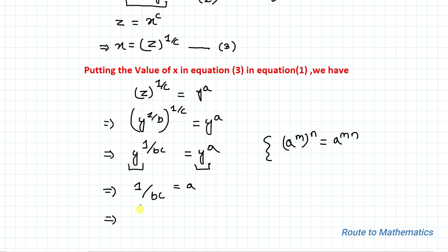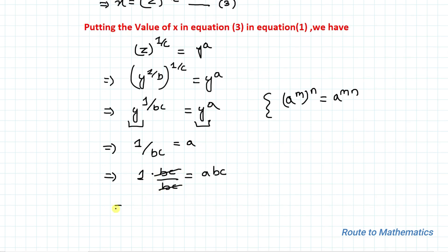Now multiplying bc on both sides of the equation, we have 1 times bc over bc equals abc. bc and bc cancel out, so we have abc equals 1.